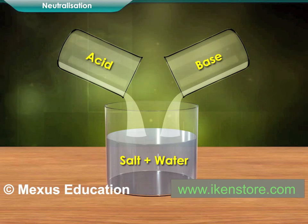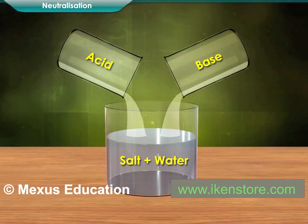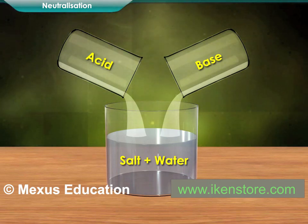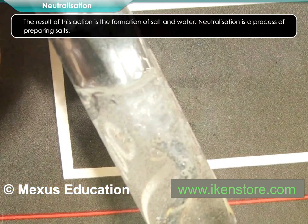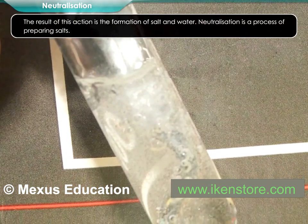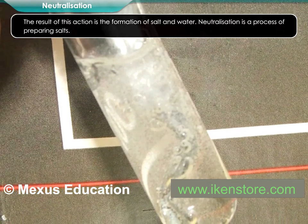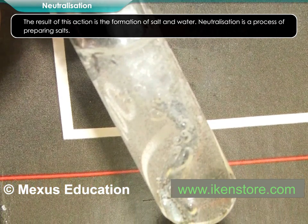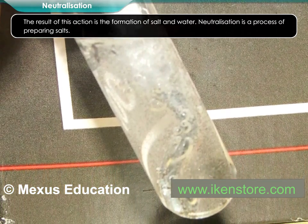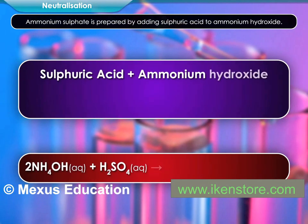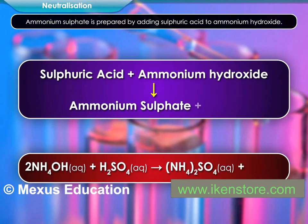A neutral solution is obtained by adding a definite quantity of an acid to a definite quantity of a base, or a base to an acid. The result of this action is the formation of salt and water. Neutralization is a process of preparing salts. For example, ammonium sulfate is prepared by adding sulfuric acid to ammonium hydroxide.